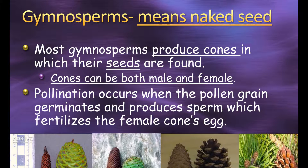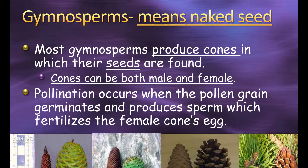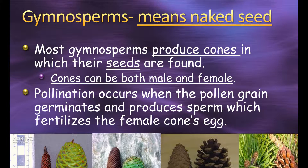The word 'gymno' means naked and 'sperm' refers to seed, so gymnosperm literally means naked seed. Gymnosperms produce cones — not fruit — and inside the cones is where their seeds are found. Some trees make male cones, some make female cones, and some make both on the same tree. Pollination takes place wherever the pollen grain germinates and makes a sperm cell, which fertilizes the female cone's eggs. The larger cones are normally the female cones and the skinnier ones are the male versions.